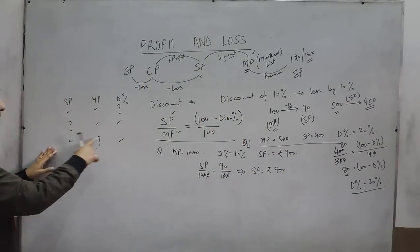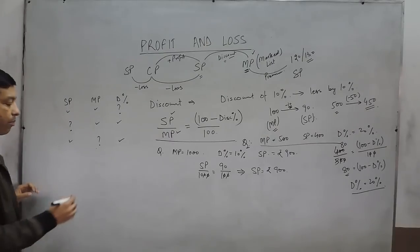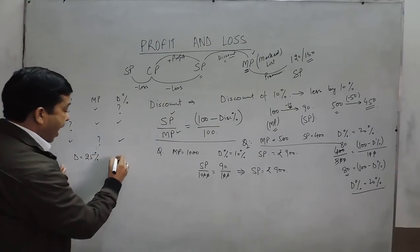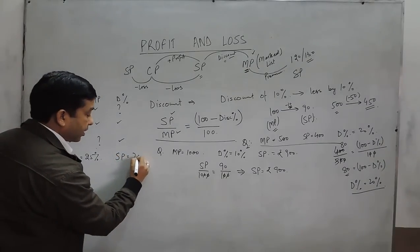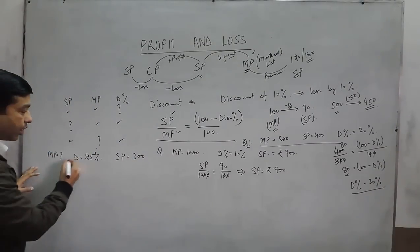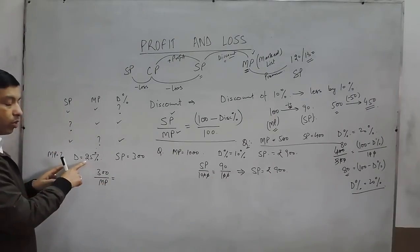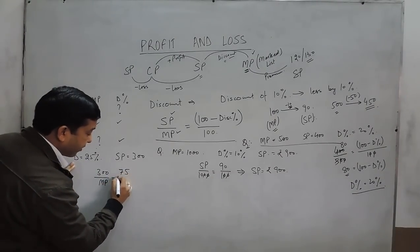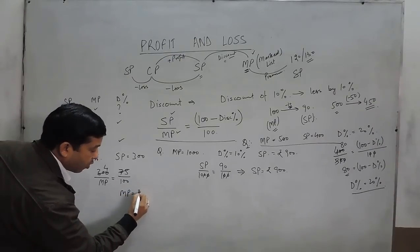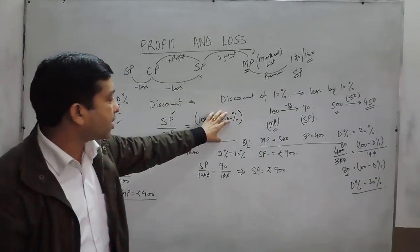Then we have the third type of question, where the selling price and the discount percent are both given and we calculate the mark price. For example, a discount of 25% is already given on an article and it is being sold for rupees 300 — what is the mark price? We set up: 300 / MP = 75 / 100. Solving, the mark price comes out to be rupees 400.